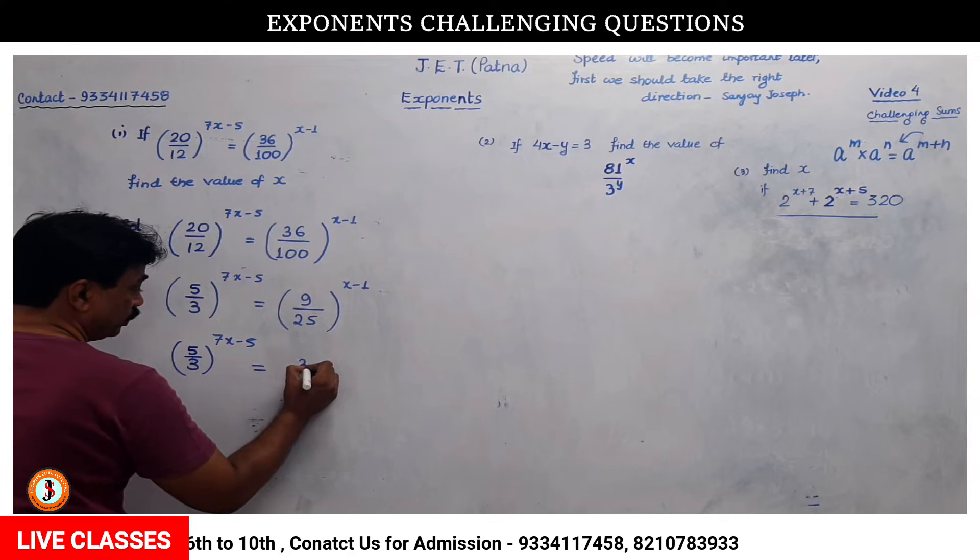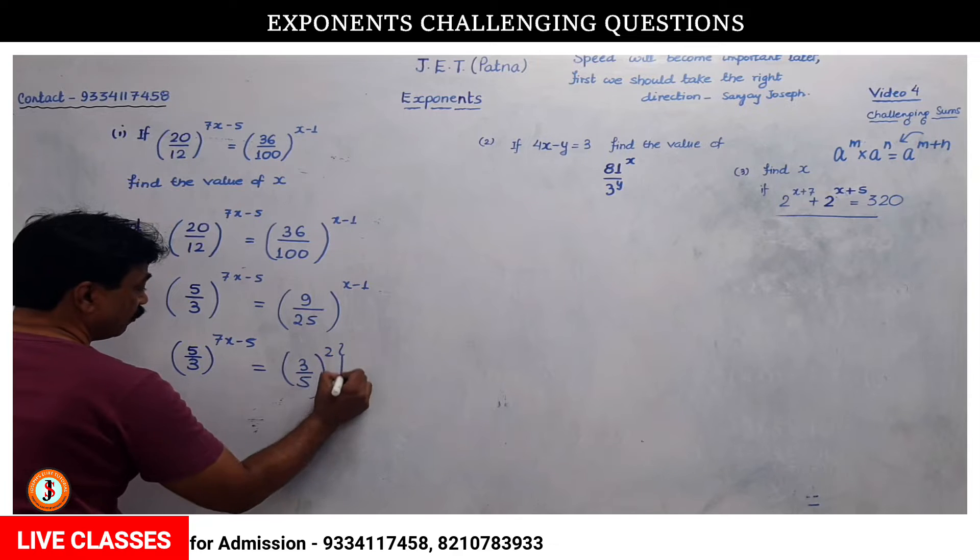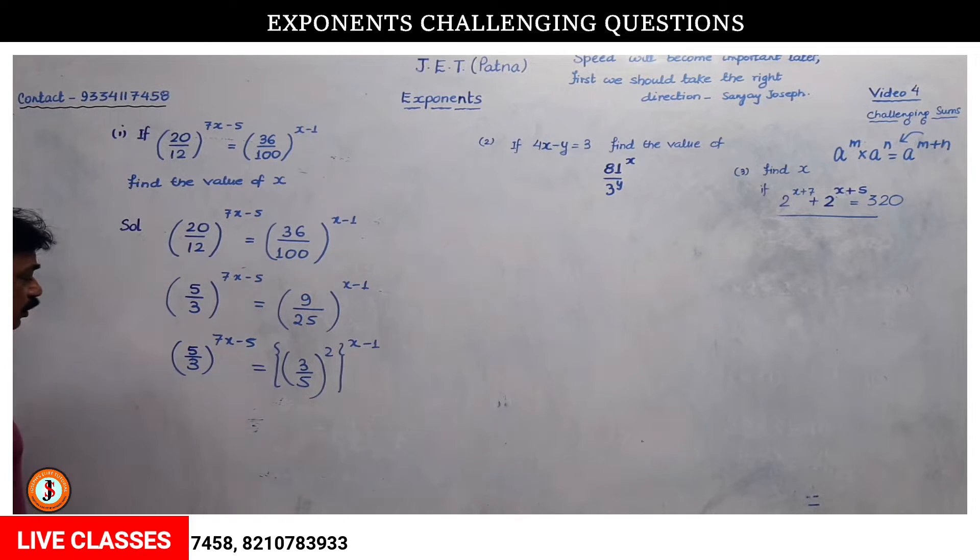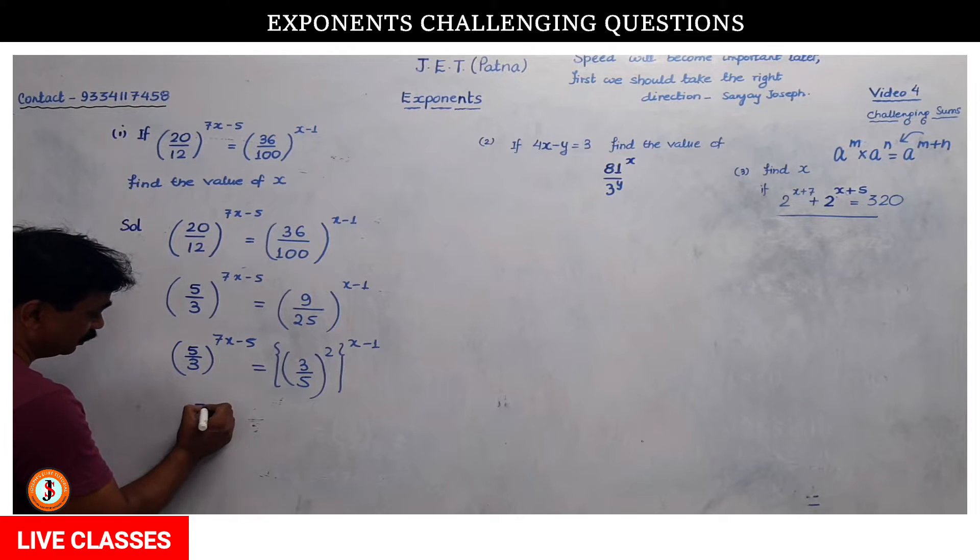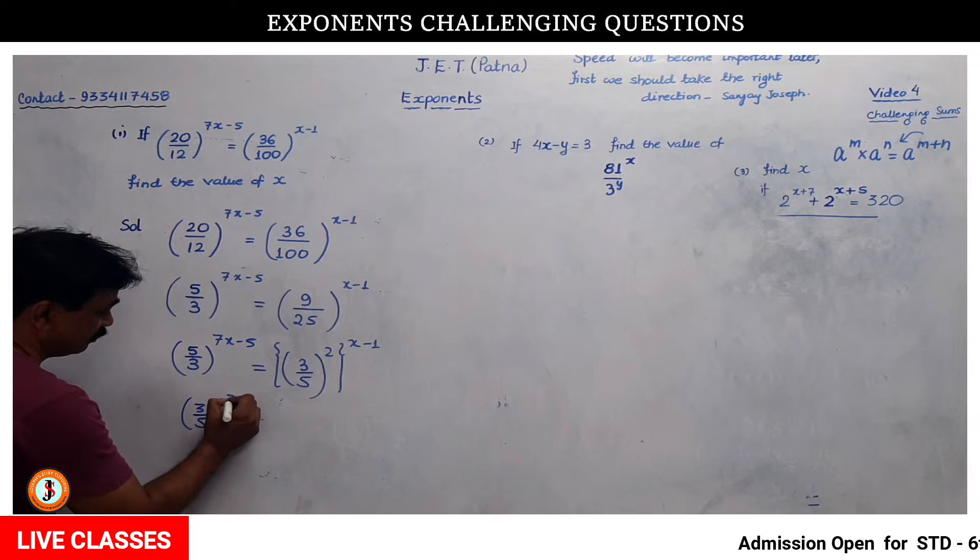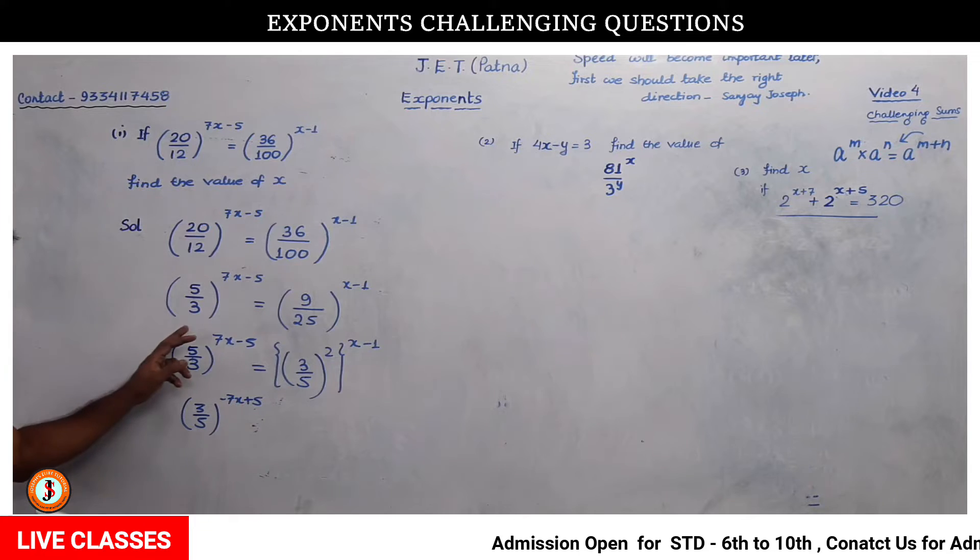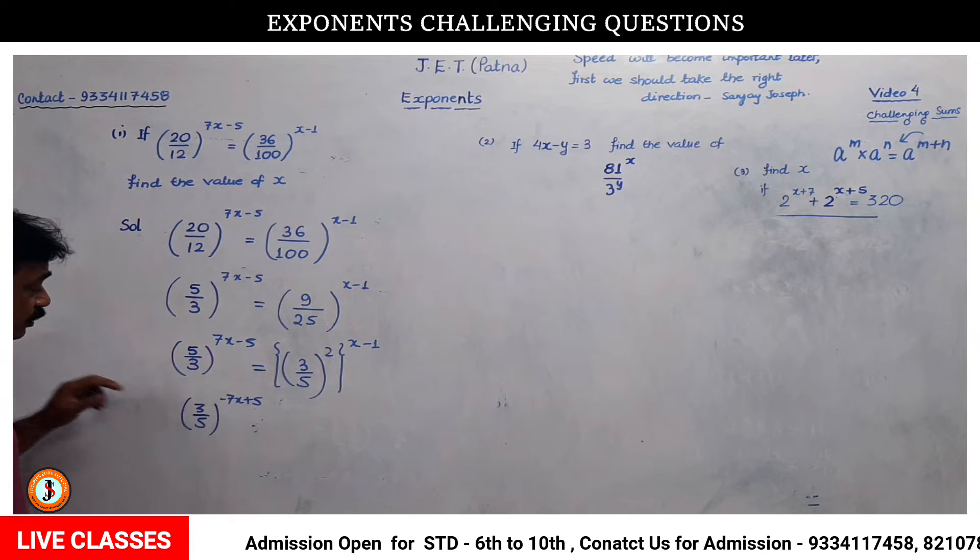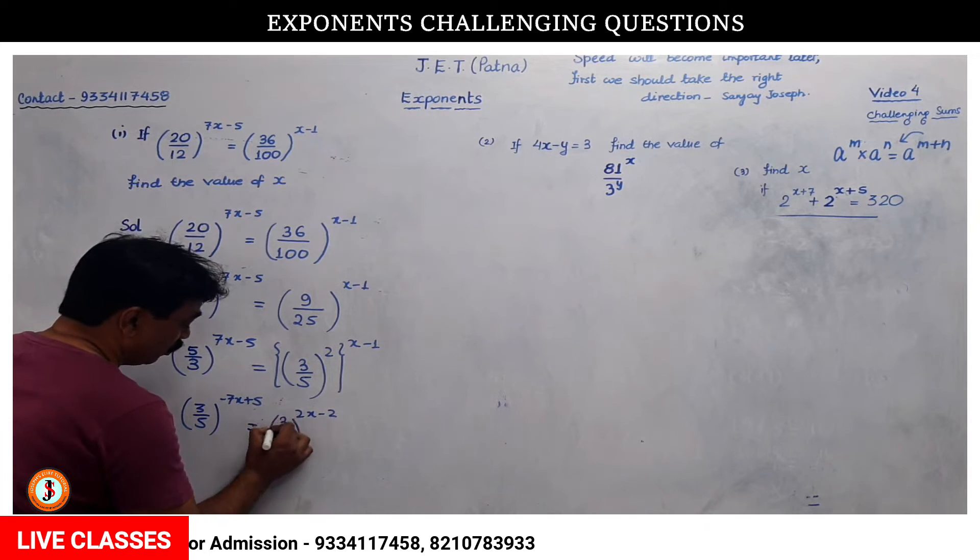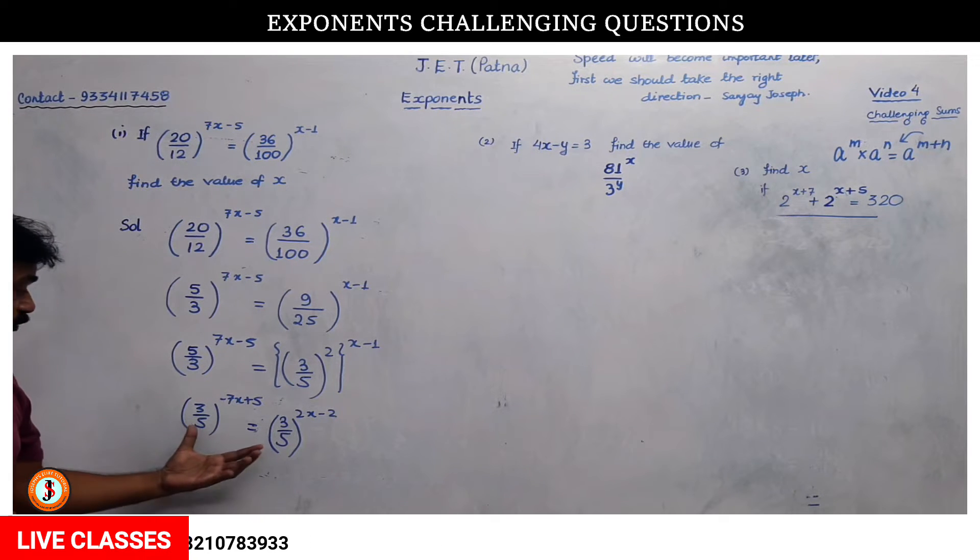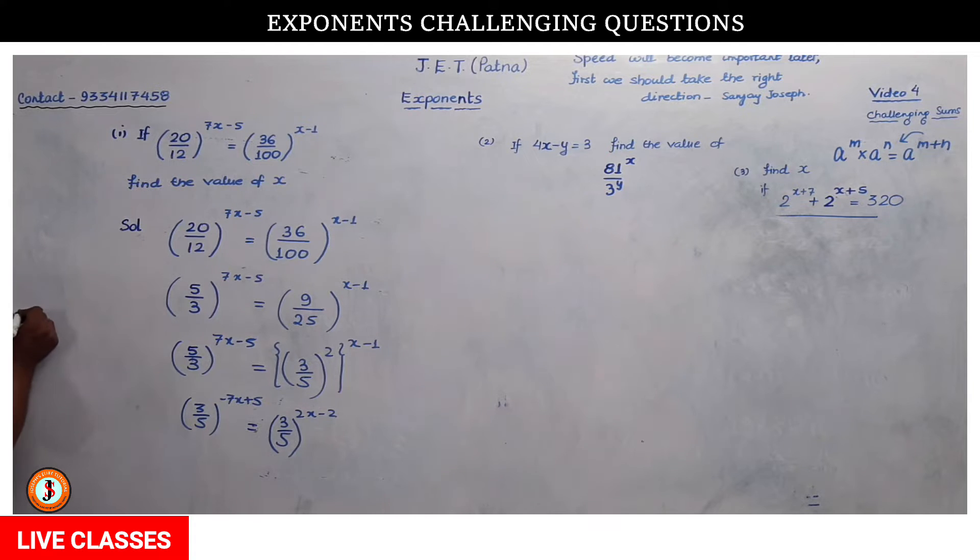This equals 3 by 5 to the power 2x minus 2. So it will be 9x equals 7, so x will be equal to 7 by 9.